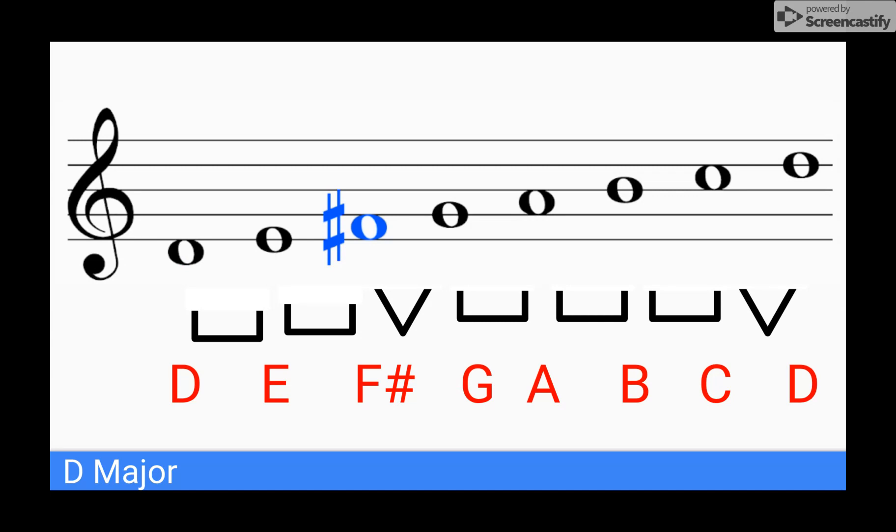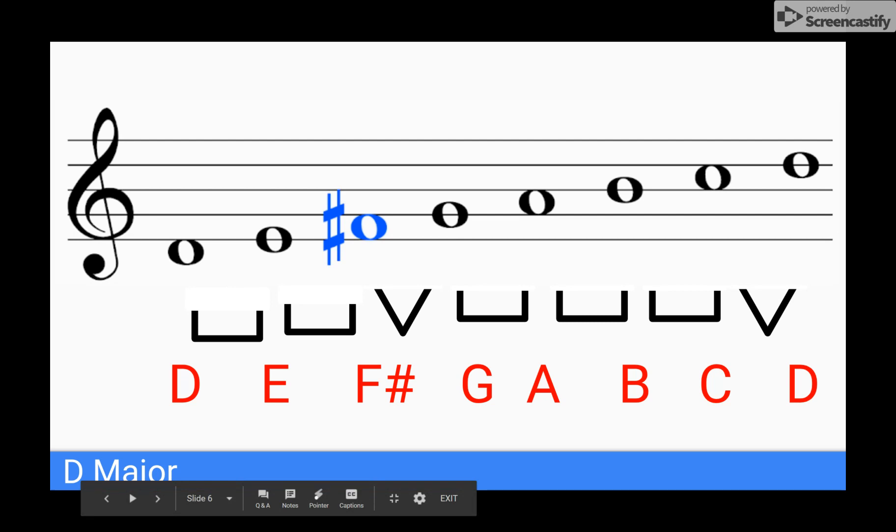Now I have a whole step. Now I need a half step between F sharp and G. Well, by changing my F to an F sharp, it has created a half step between F sharp and G. So I can move on.